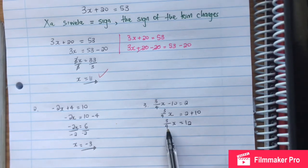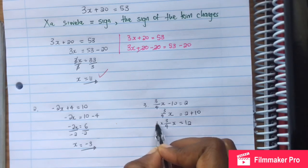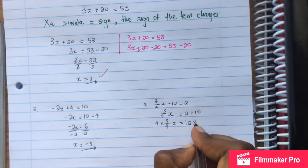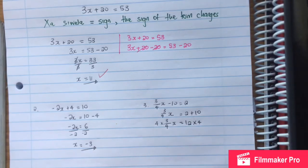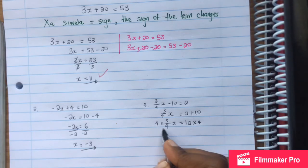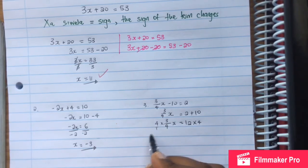3 over 4 x. Now we see it's divided. So the opposite of divide is multiply. We want to multiply by 4 on both sides.